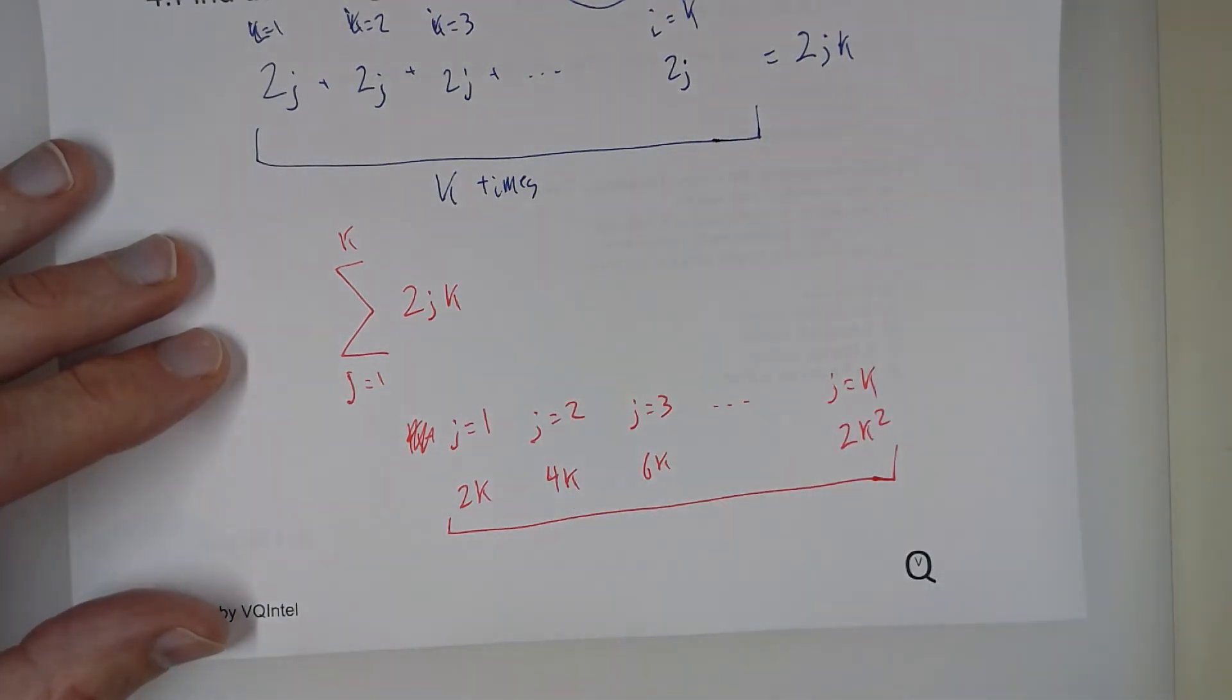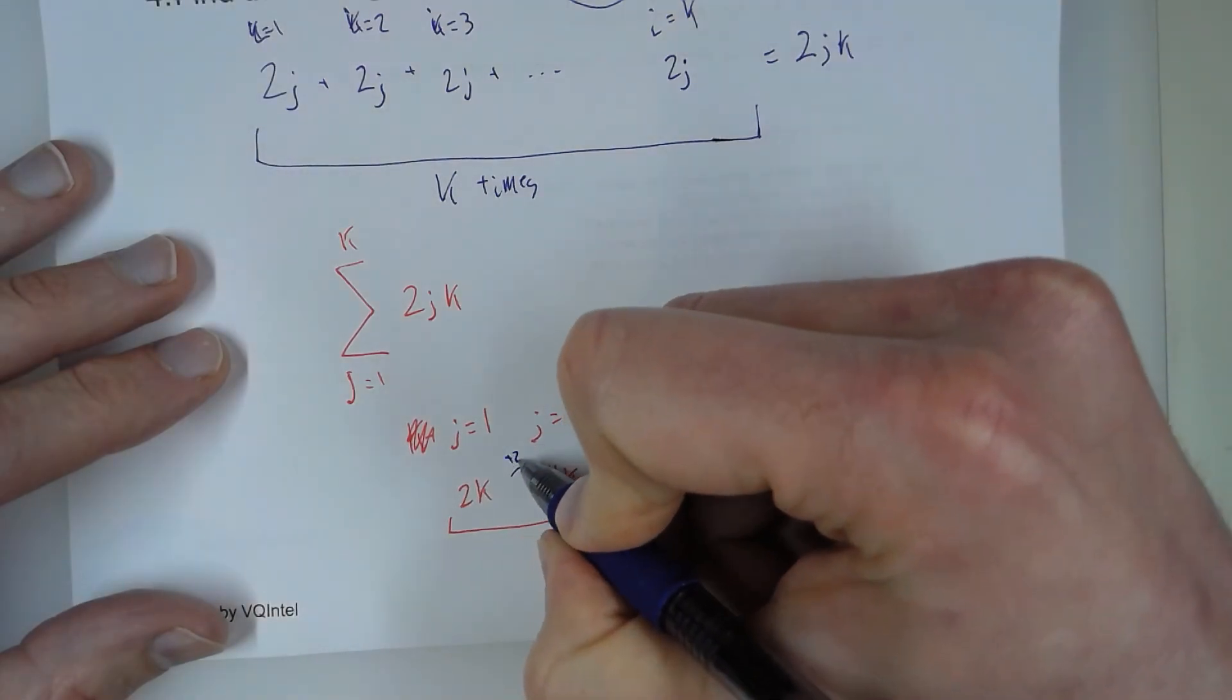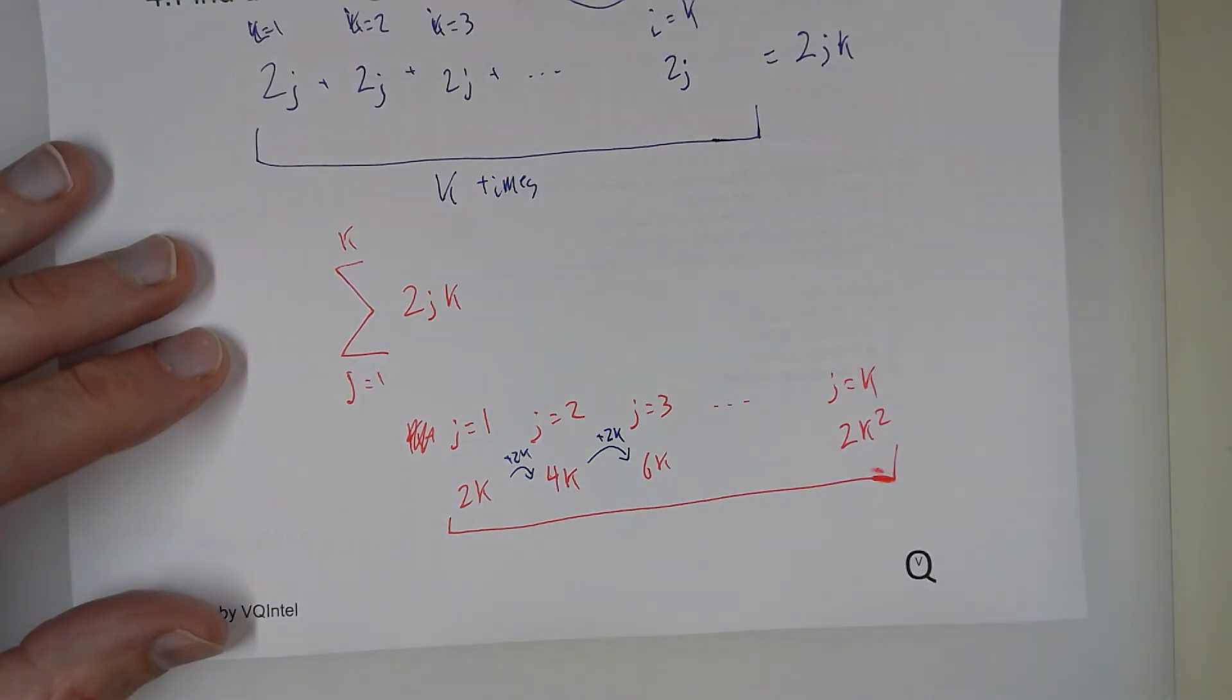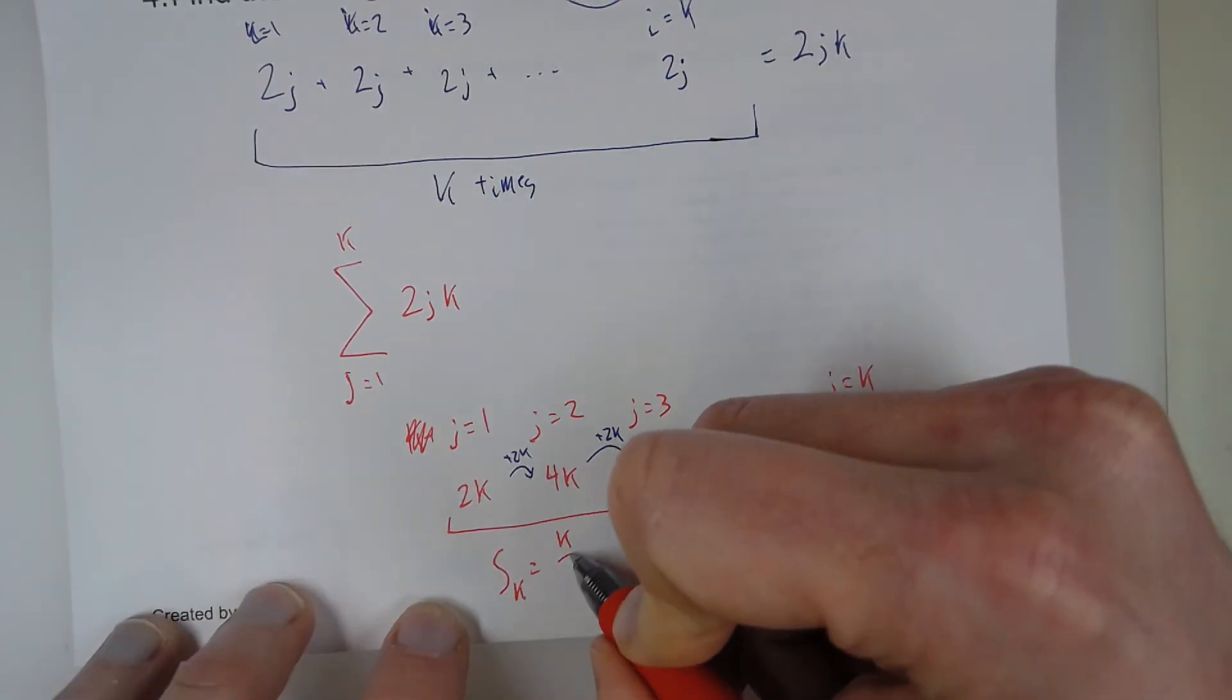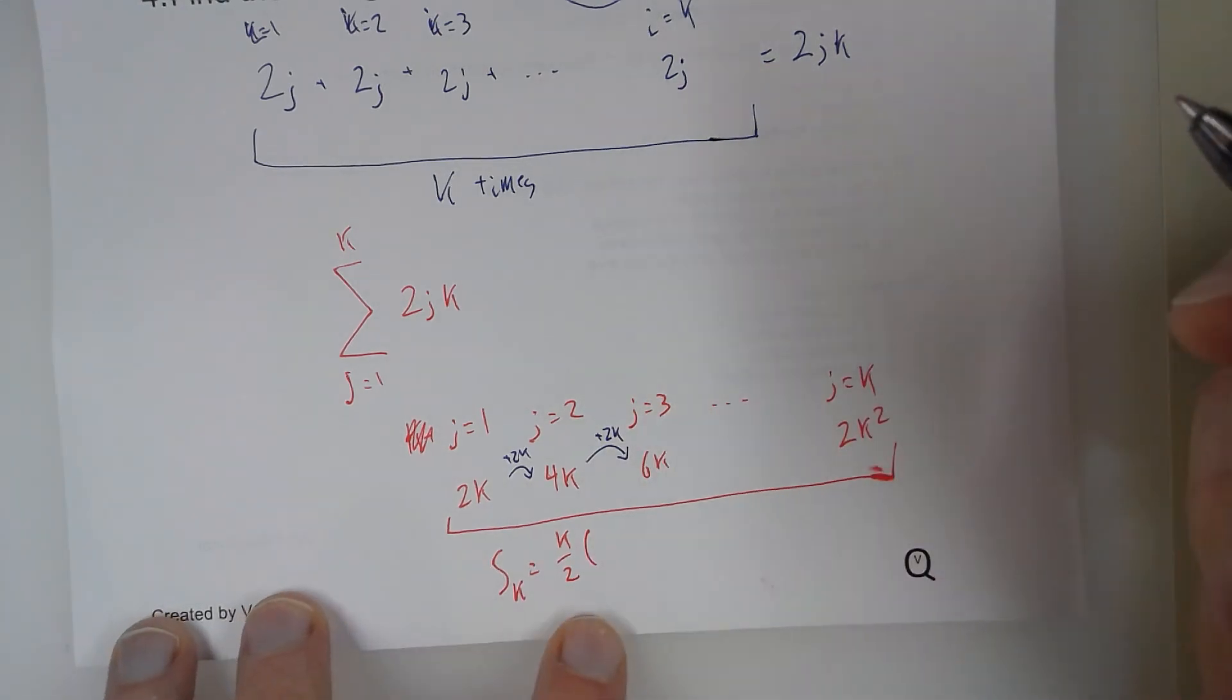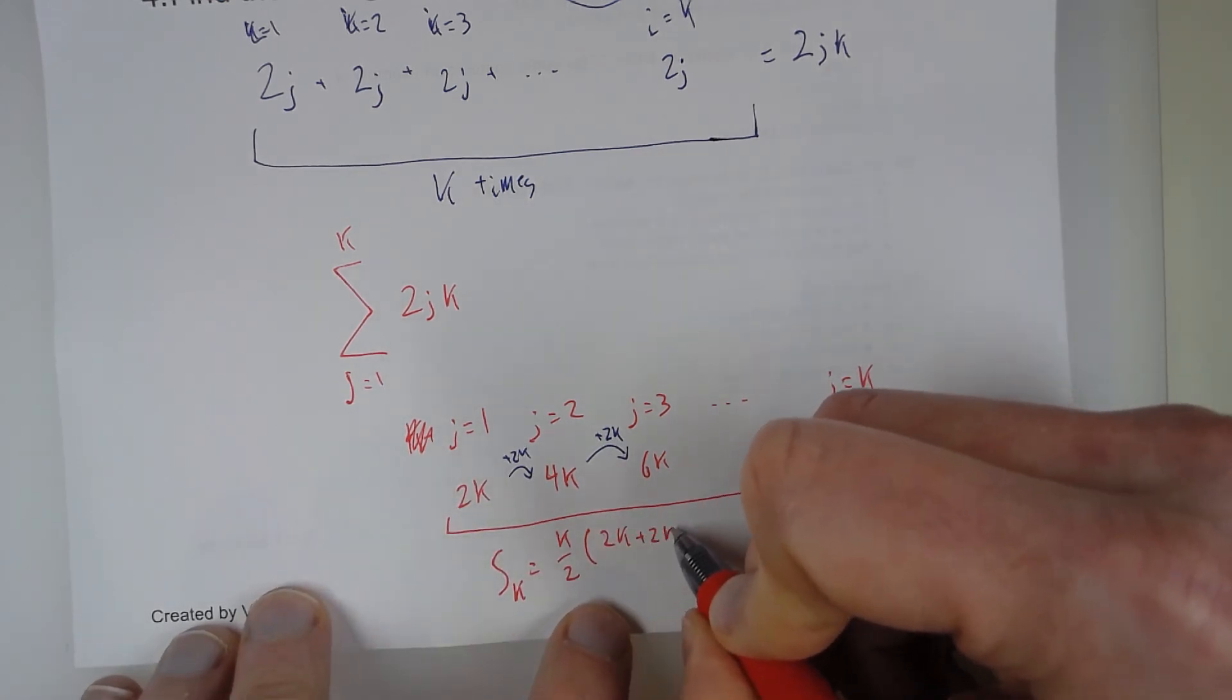And the common difference is 2k. That's what we're adding from term to term. So we want the total of the first k number of terms. Just divide it by 2. And then what we're going to do is add the first and the last. So 2k plus 2k squared.